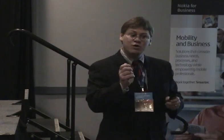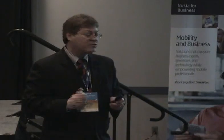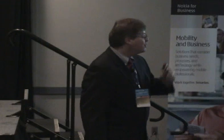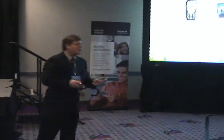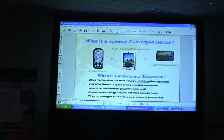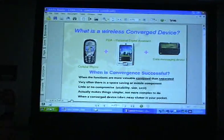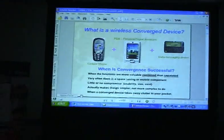When the functions become more valuable than combined and separated, that's really when you want a smartphone — you want integration in these mobile devices. Very often there's a space savings. I have a smartphone so I can do everything: I can surf the web, I can do everything on this device. When there's little or no compromise — I don't want to compromise size, I need small, I need something that fits in the pocket. It actually makes things simpler, not more complex. I need simplicity, not complexity. I think smartphones aren't quite there yet in that category, but they're getting there. Basically, we want to remove clutter from your pocket — I want one device, I want it to do everything, I want that device to be my main tool for business.